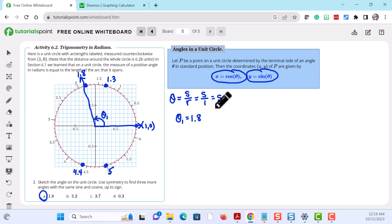So theta 1 is 1.8. We found theta 2 is approximately 1.3, theta sub 3 is approximately 4.4, and theta sub 4 is approximately 5.